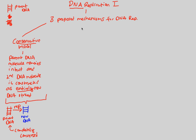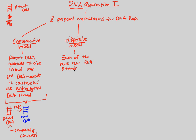Some people believed it was a more complex process known as the dispersive model. This seems intuitive, but when we look at it, we realize it's probably not right either. In the dispersive model, I like to think of it as the exact opposite of the conservative model. Each of the two new DNA strands — because we end up with two strands in this replication process — is a mix of old and new DNA.